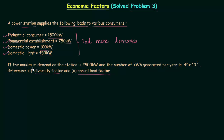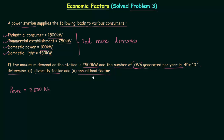If the maximum demand on the station is 2500 kilowatt, then P_max equals 2500 kilowatt. The number of kilowatt hours generated per year is 45 into 10 raised to the power 5. We have to determine the diversity factor and the annual load factor.